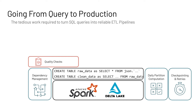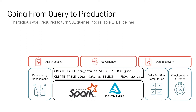Once you have everything working, you now have to put quality checks in place. How do you ensure the data is the way you want it? For example, a timestamp should be greater than January 1st, 2020, because that's the only valid date range. Then you need to build governance — tag every table, every column, every row: this has PII, etc. And then do data discovery: how would others know this data exists so they can use it instead of rebuilding it from scratch?